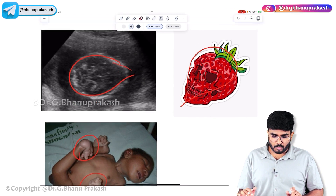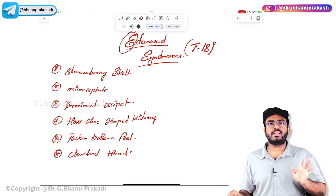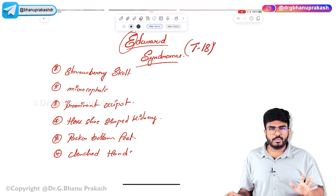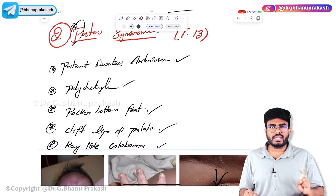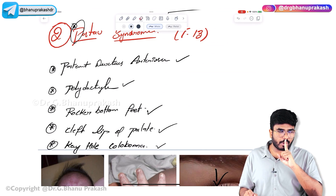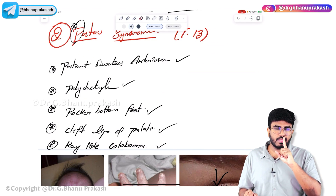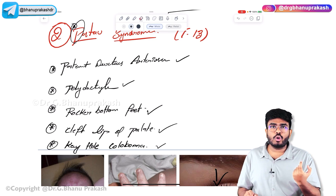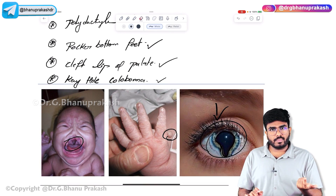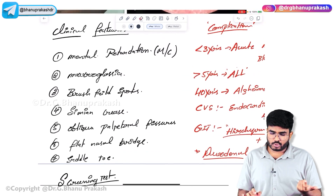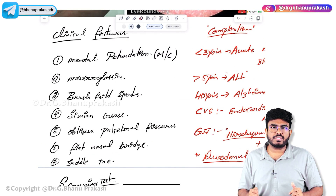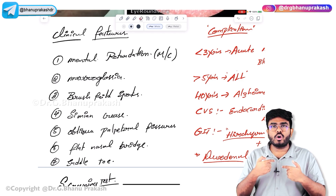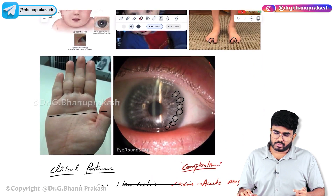Summary recap — Edward syndrome: trisomy 18, microcephaly, prominent occiput, rocker bottom feet, horseshoe kidneys, clenched fists. Patau syndrome: polydactyly, cleft lip and palate, keyhole coloboma, rocker bottom feet. Down syndrome: brush field spots, palmar simian crease, mongoloid facies, oblique palpebral fissures, saddle toe, Hirschsprung disease, duodenal atresia, endocardial cushion defects.